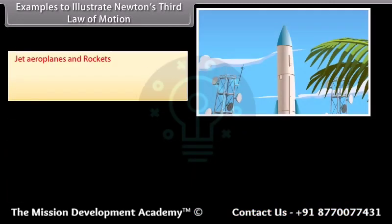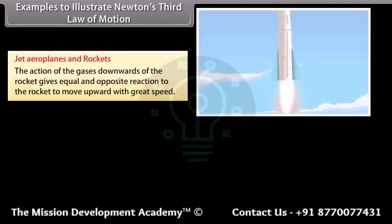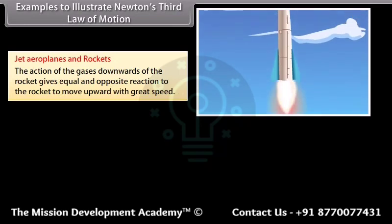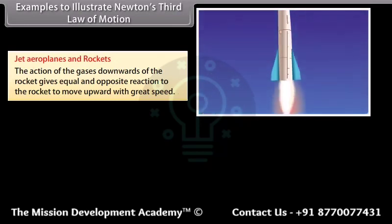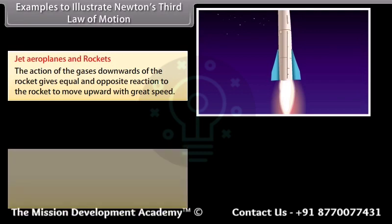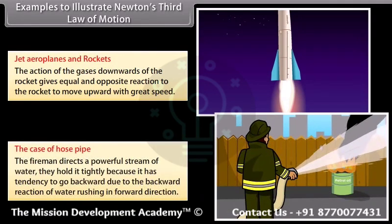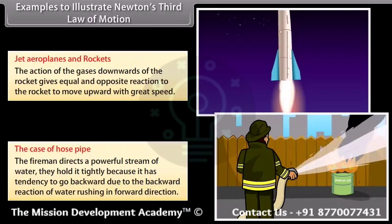Jet aeroplanes and rockets: the action of the gases downwards from the rocket gives an equal and opposite reaction to the rocket, causing it to move upward with great speed. The case of the hose pipe: the fireman directs a powerful stream of water and holds it tightly because it has a tendency to go backward, due to the backward reaction of water rushing in the forward direction.